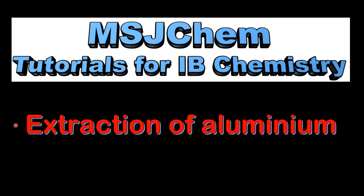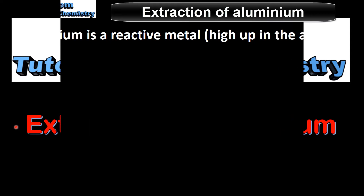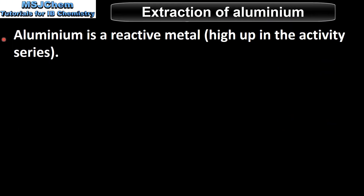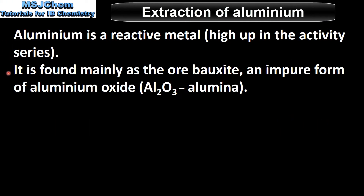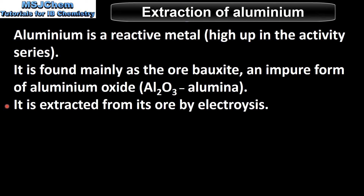This is MSJChem. In this video I'll be looking at the extraction of aluminium. Aluminium is a reactive metal, it's high up in the activity series. It is found mainly as the ore bauxite, in the pure form of aluminium oxide. It is extracted from its ore by electrolysis.